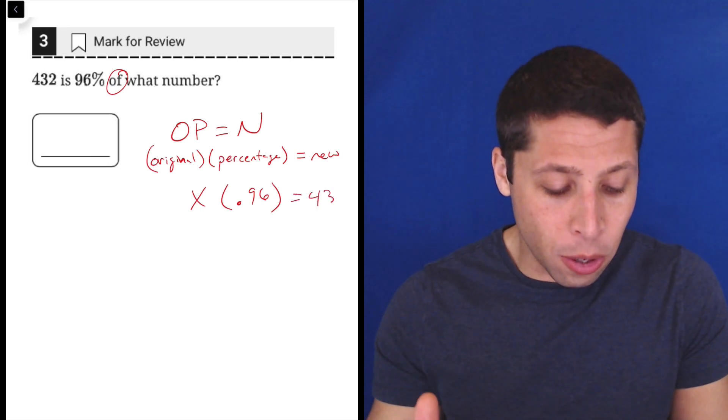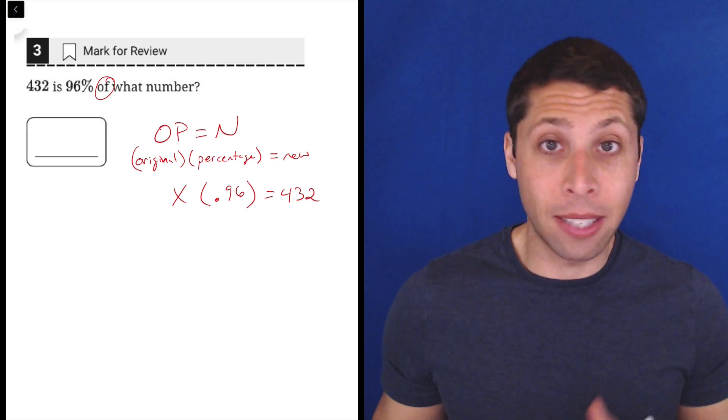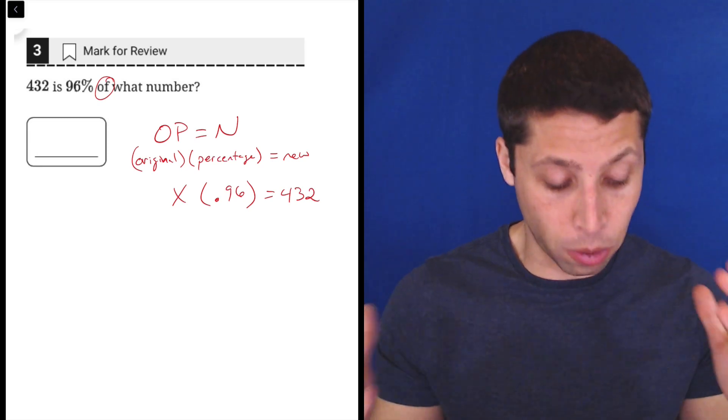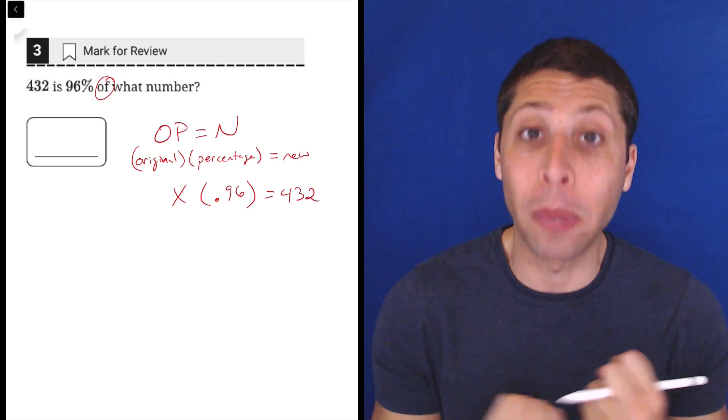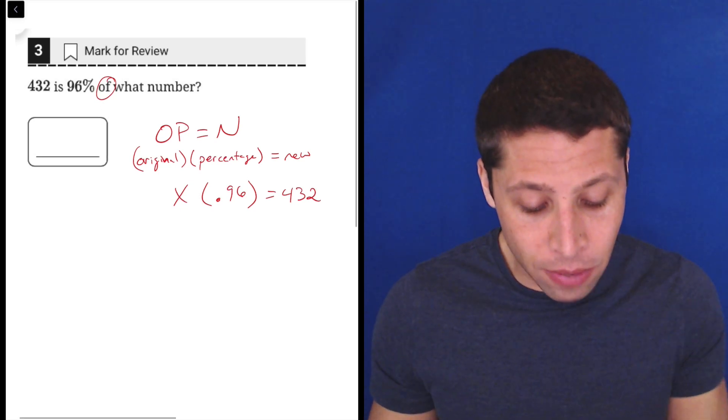We know the new. And this is exactly what they were hoping we would miss because it's very tempting to just do 96% of 432 because that's how we think about percentages. It's a multiplication problem. But in this case, because of what they gave us, it's a division problem.